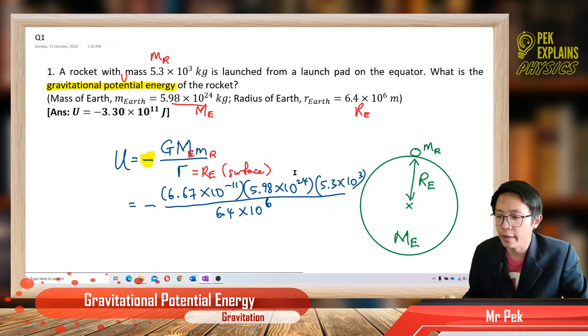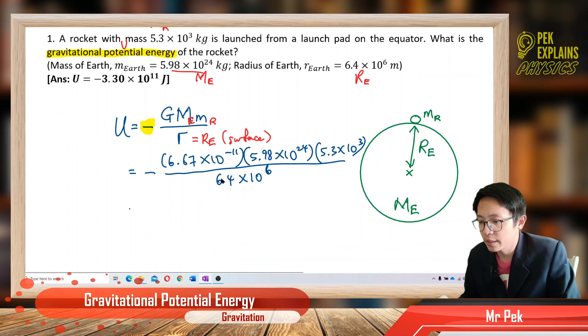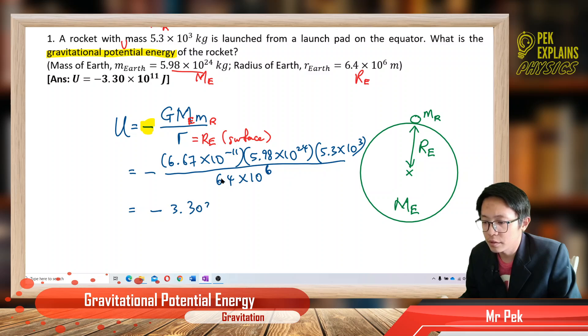There's no square because for scalar quantity, the R is not squared. So the answer we will get is negative 3.303 times 10^11 joules.